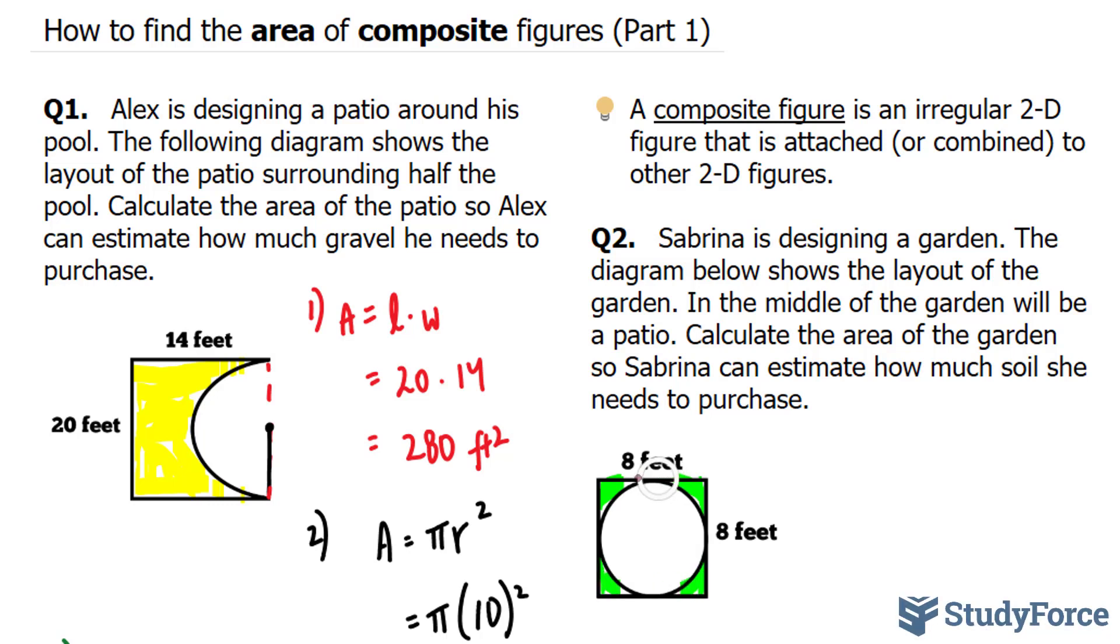In the middle is a complete circle. So what we have to do is find the area of this shape, which happens to be a square because it's 8 feet by 8 feet, and then subtract it by the area of this circle. So how do we find the area of a square?